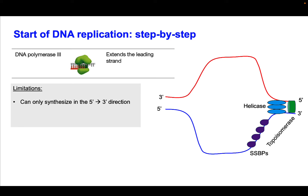So far we've set up our replication bubble by opening up the double helix. Now we're going to start building our replication fork. The enzyme that does the work — the enzyme that is going to polymerize the new daughter strand — is DNA polymerase 3. I'm going to talk about another DNA polymerase later called DNA polymerase 1, but this is DNA polymerase 3, and it's going to extend the DNA on the daughter strand. This enzyme has some limitations.